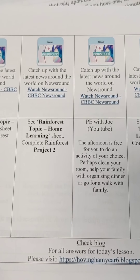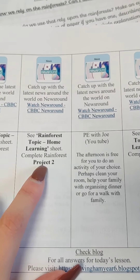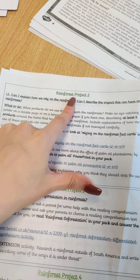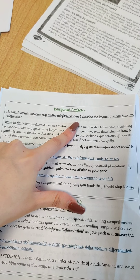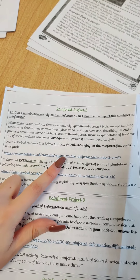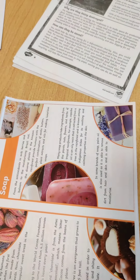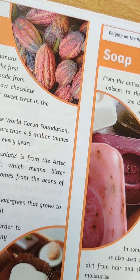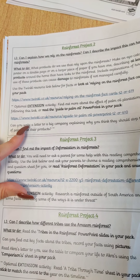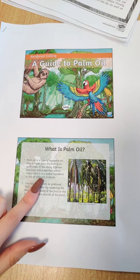For topic work this week, I'm looking at rainforests. Today I need to look at the rainforest topic home learning sheet and I'm completing rainforest project two. We're looking at how we rely on the rainforest and the impact this can have on it. It tells me I need to look at the relying on the rainforest fact cards, which are these ones here. They show the different ways we use the rainforest for things we have at home. If you want an extra activity, you can look at palm oil — there's some information here.